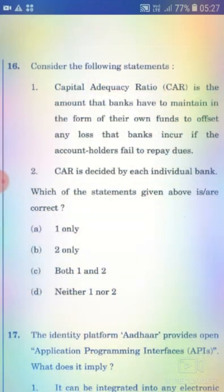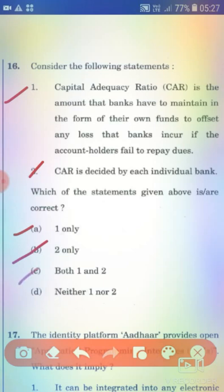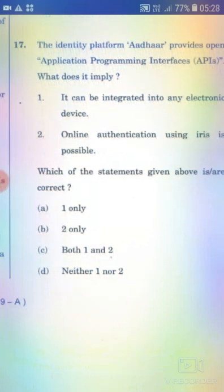Consider the following statements. Statement 1: Capital Adequacy Ratio (CAR) is the amount that banks have to maintain in the form of their own funds to offset any loss that banks incur if the account holders fail to repay dues. Statement 2: CAR is decided by each individual bank. The right answer is Option A — 1 only.